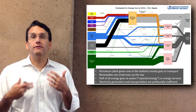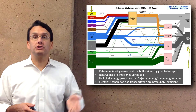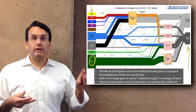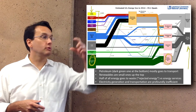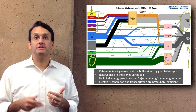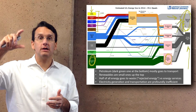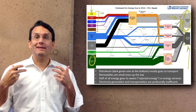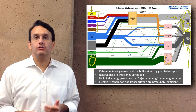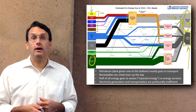Here we see a chart of US energy usage in 2012. On the left-hand side are all the different sources of energy; on the right-hand side is where they go. Petroleum is the dark green one at the bottom and it mostly goes to transport. Renewables are the small ones at the top. One striking thing about this graph is that about half of all the energy that gets used goes to waste. The light gray box at the top right is called rejected energy, and the darker gray box is energy services.